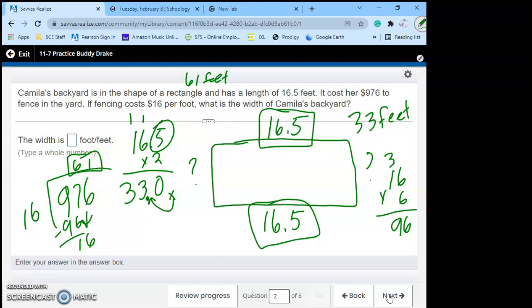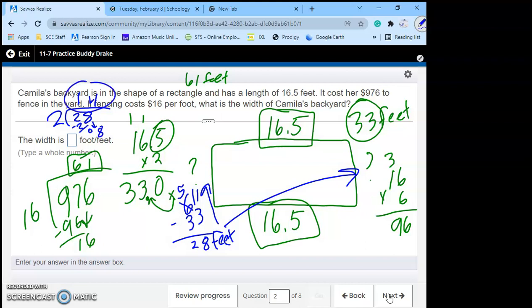So my total perimeter is 61 feet. Well I've already used 33 feet, so how much is left? Well I can subtract 61 minus 33. 11 minus 3 is 8, 5 minus 3 is 2, so I have a total of 28 feet to put here and here. Well how many spots is that? 2. So if I take 28 divided by 2, 2 will go into 8 four times, so our answer for the missing width is 14 feet.